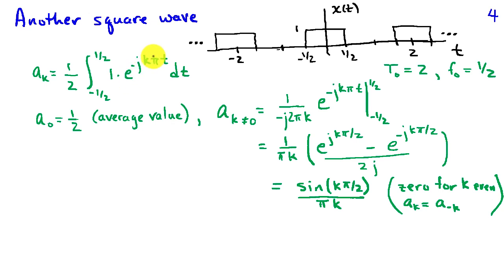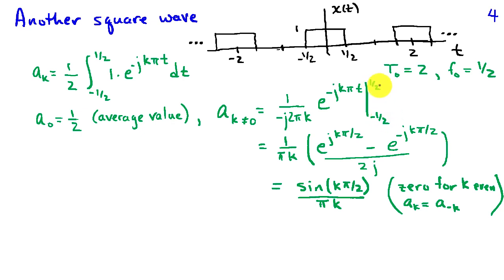Substituting k equals 0, a_0 becomes one half — again the average value of this signal. When k is not equal to 0, a_k becomes 1 over negative j 2 pi k times e to the minus j k pi t, evaluated at one half and minus one half. Substituting these limits and grouping the j terms with the exponentials using the Euler expansion for the sine function, this simplifies to sine of k pi over 2, divided by pi k.